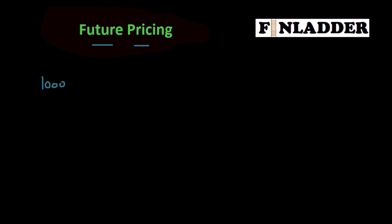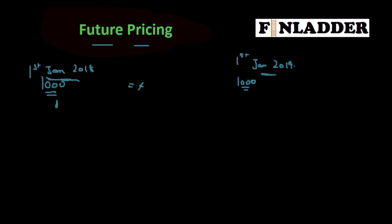First of all, we need to understand that 1000 rupees on 1st January 2018 and 1000 rupees on 1st January 2019 are not equal. I don't consider them equal because there are a number of costs that you have to add — this is mostly because of the inflation rate.